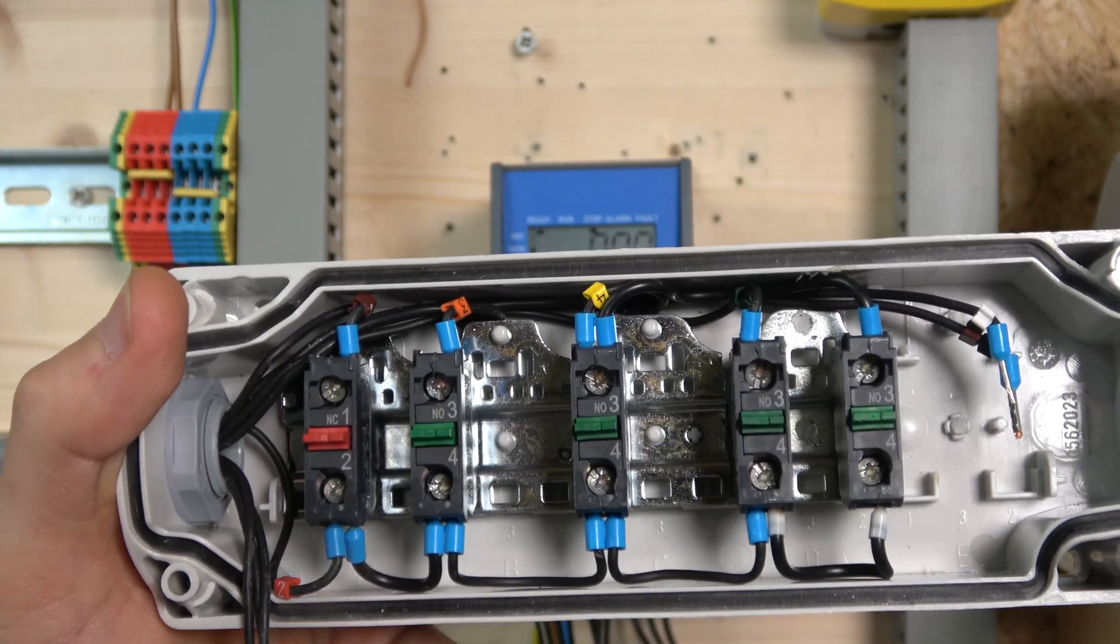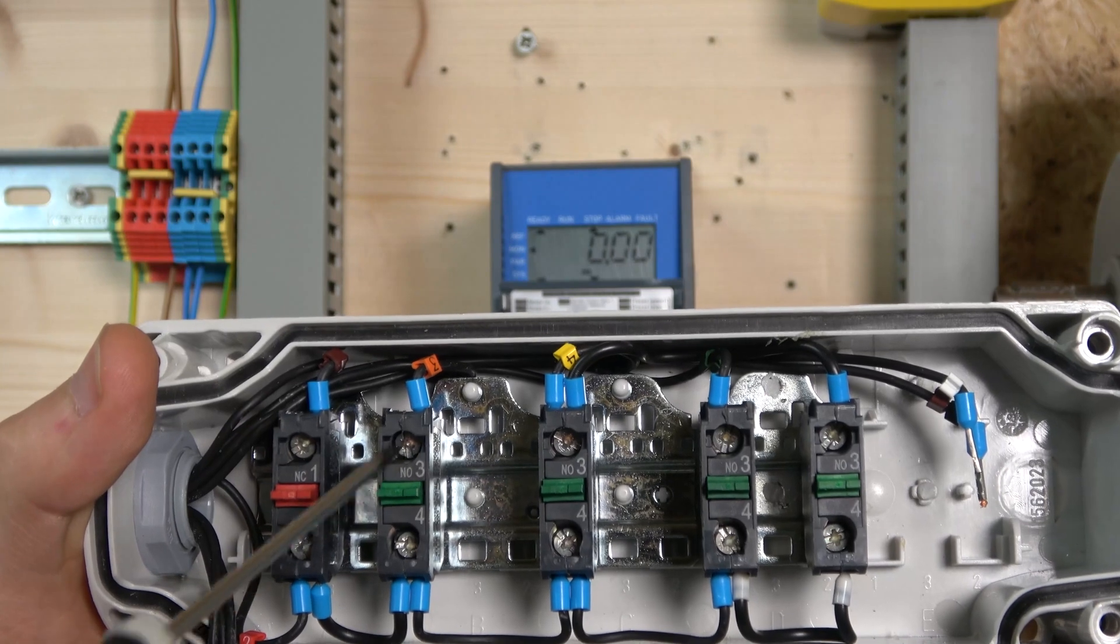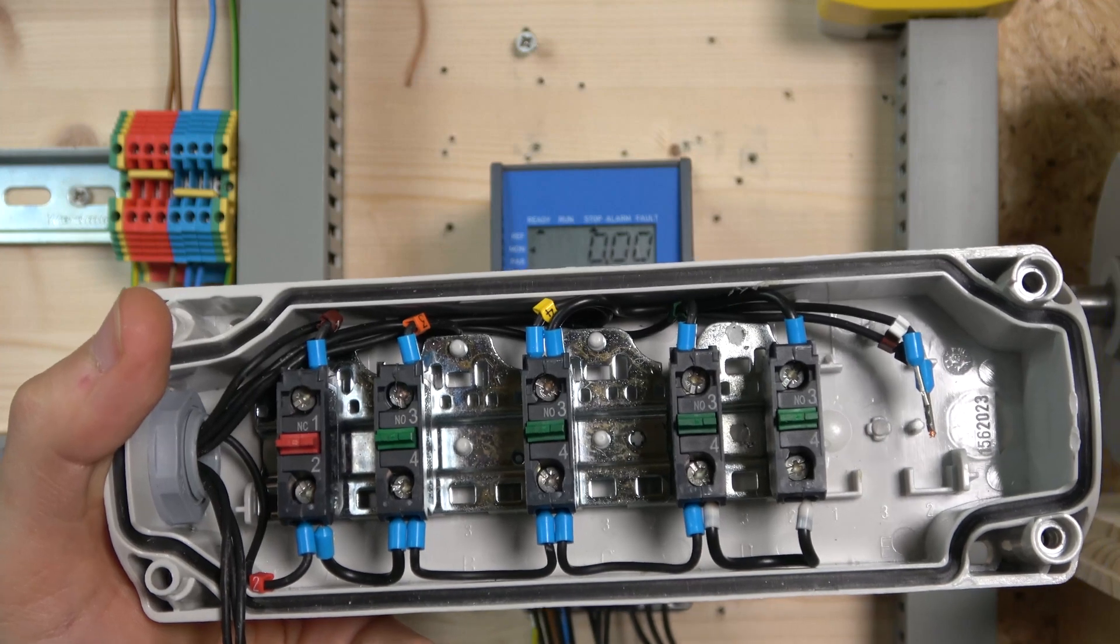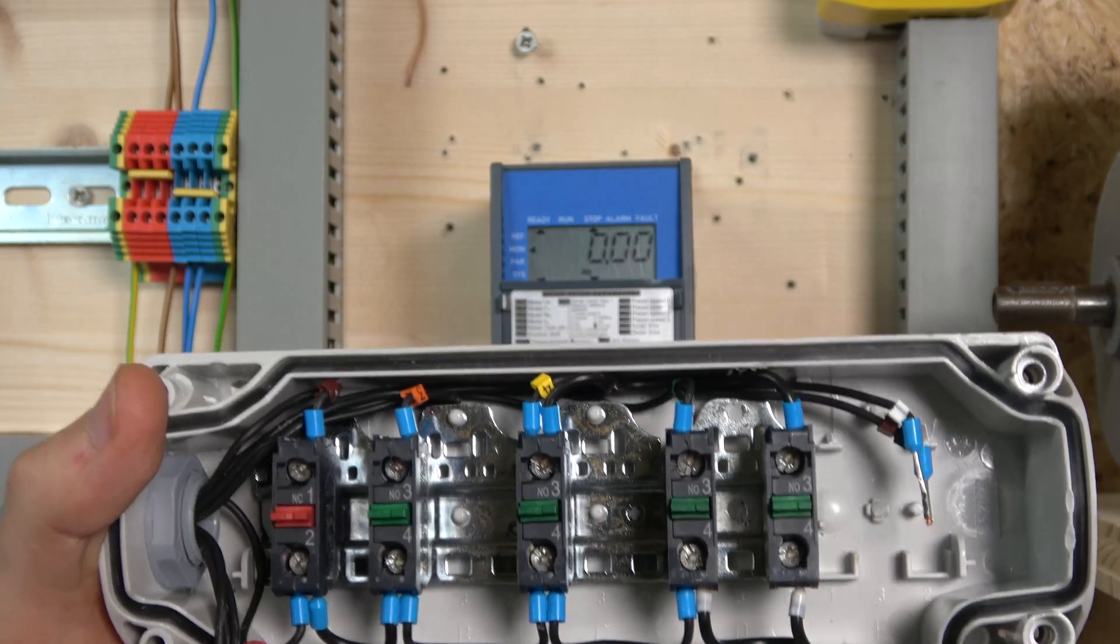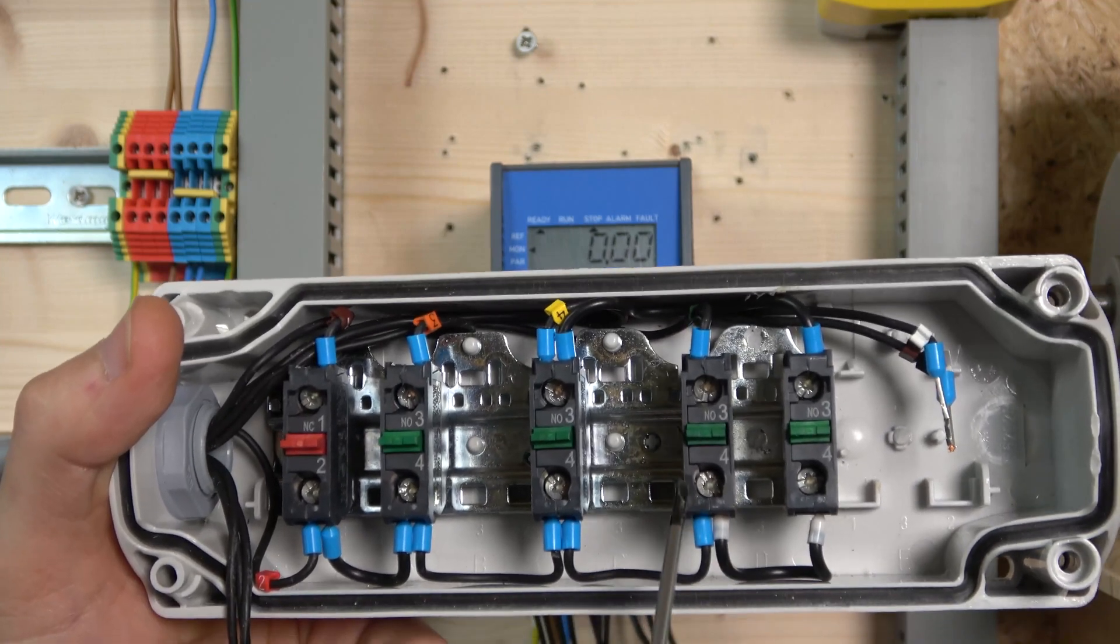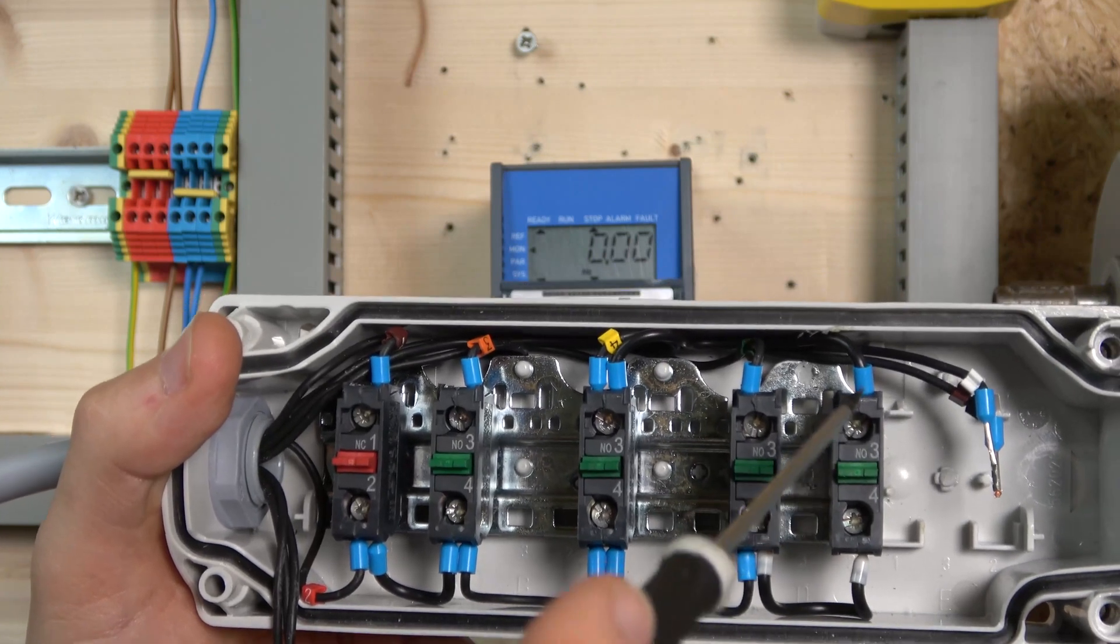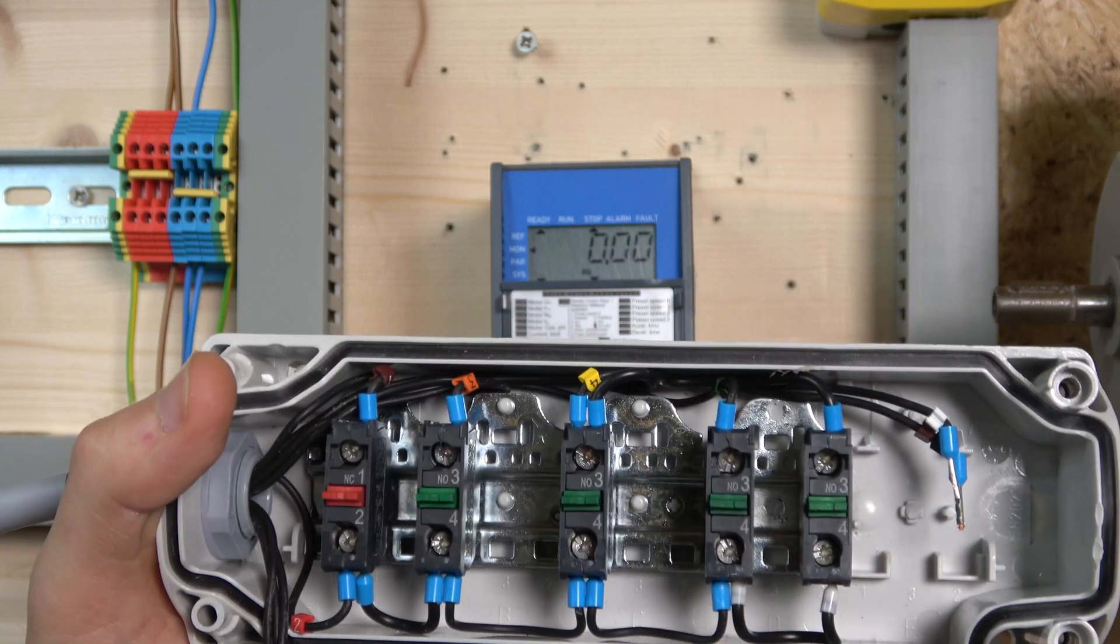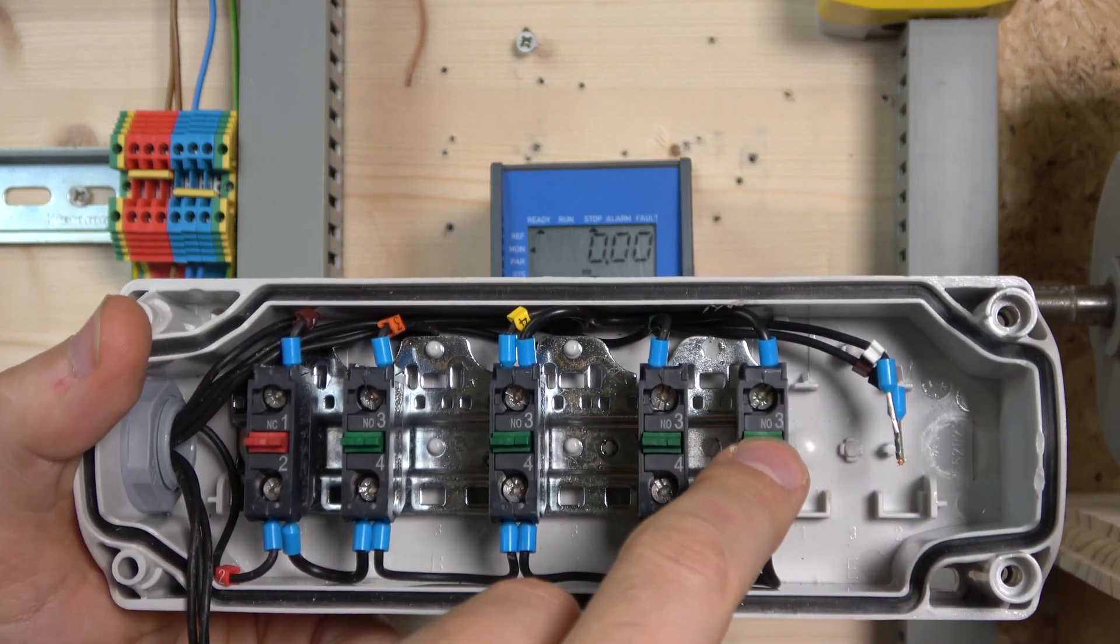The first normally open contact runs forward, second is reverse, and these two activate jog. There's no actual jog function in the drive itself - at least I couldn't find it. We'll use one of the preset speeds as our jog. For preset speed to work, it requires a run signal, which can be reverse or forward. I chose reverse.